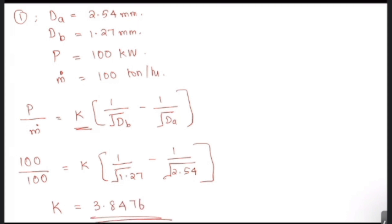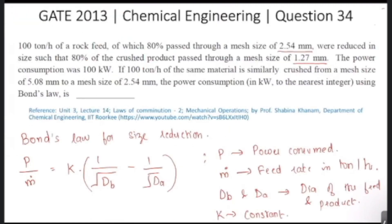Now all we have to do is use this value for the constant K in the second size reduction that they have asked us to find, which is the size reduction from 5.08 mm to 2.54 mm.